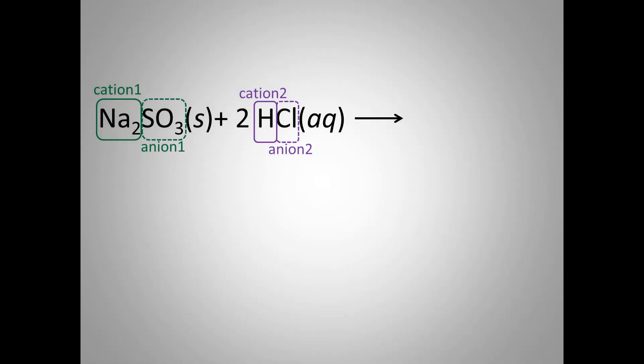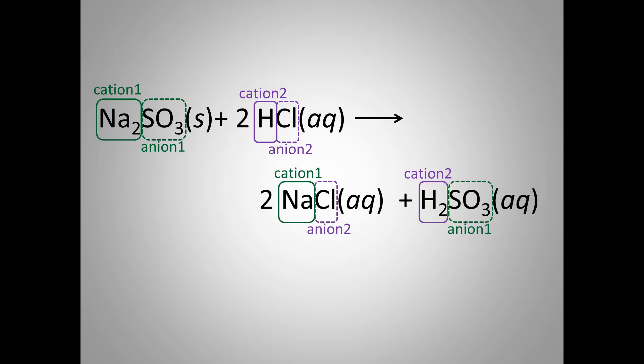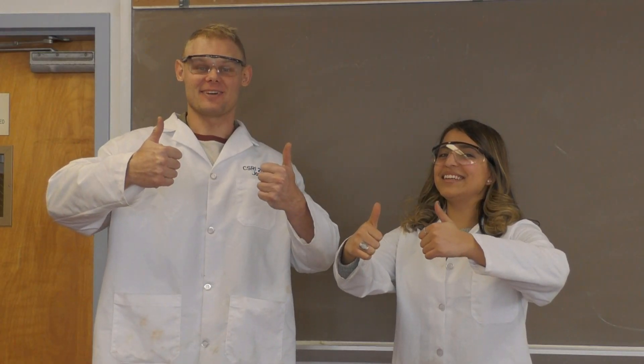In this reaction, H plus and sodium are the cations, while chloride and sulfite are the anions. And when these exchange partners, one of the products is H2SO3. While in solution, this compound readily decomposes to H2O and SO2 gas. Have fun this week!